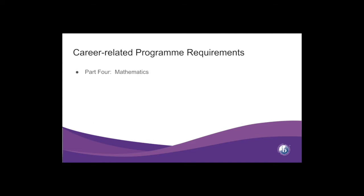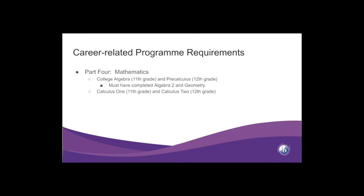The last part of your Career Related Program is Mathematics. You have two tracks: College Algebra in 11th grade and Pre-Calculus in 12th grade, which requires completing Algebra 2 and Geometry. Your other option is Calculus 1 in 11th grade and Calculus 2 in 12th grade, for which you must have completed Pre-Calculus in 10th grade.